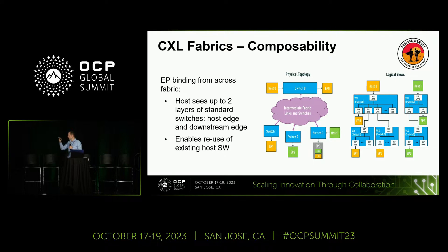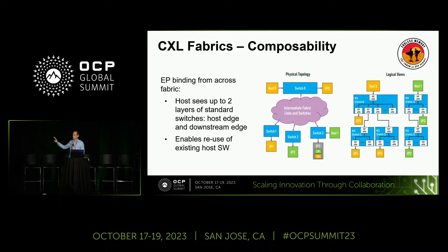If you look at the center there — a physical topology with your host and your endpoints, multiple hosts, multiple endpoints spread out throughout the fabric — the logical view, when the host goes out and explores its architecture, it's only going to see up to two layers of switches.